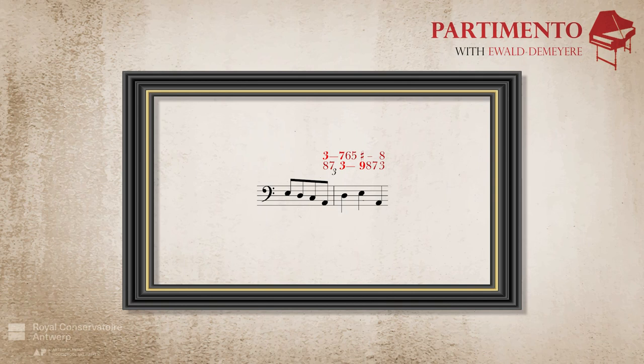With 16th notes as smallest note values, one could continue working with a motif consisting of an eighth note followed by two 16th notes. In this case, the upper voice could start on the downbeat of bar 3 with a suspension on C, which is prepared on the weak beat of the previous bar. The middle voice then imitates this motif on the second beat of bar 3, by starting with the suspension F, which is prepared by a quarter note F on the first beat.